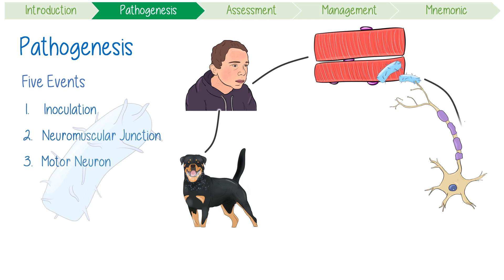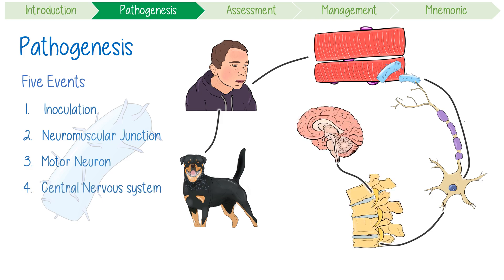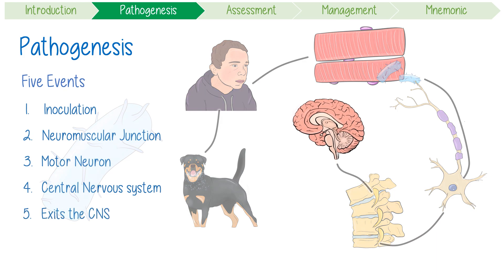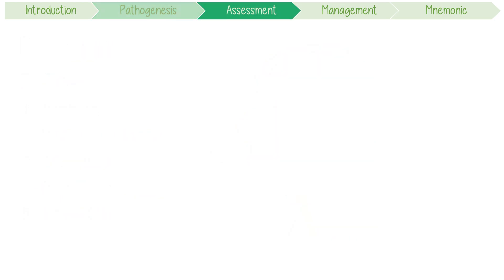Third, the virus travels up the axon of the motor neuron and replicates. Fourth, it continues to spread up to the central nervous system and the brain, where it rapidly disseminates. Finally, the rabies virus exits the CNS through motor, sensory, and autonomic nerves, and by locally replicating in salivary and lacrimal glands in order to be transmitted to the next host.